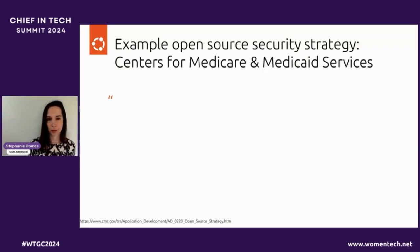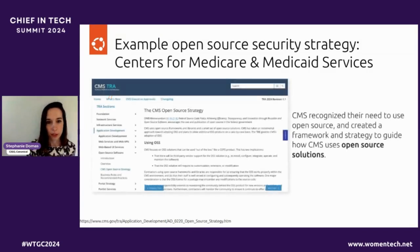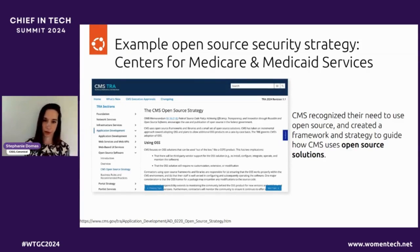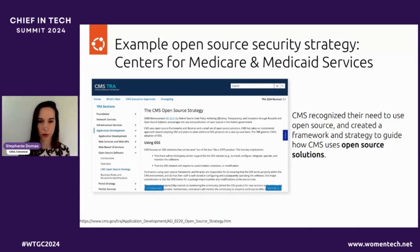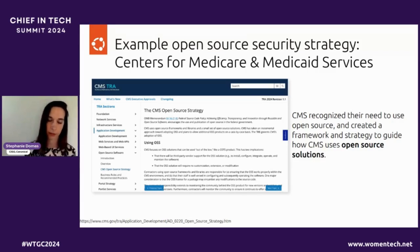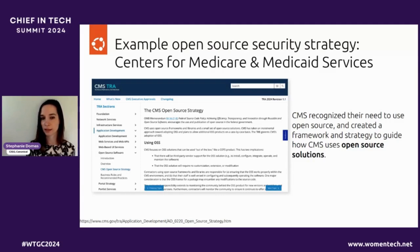A great example of an open source strategy is the one the Center for Medicare and Medicaid recently published. If you go to their website and search for open source solutions, you can see a really intentional strategy they put together. For those thinking about where to start or how to make your own open source strategy, I would recommend reading through this Medicare and Medicaid one — it's publicly available. They thought through all of the different scenarios to outline when open source could be used in their internal development, what types of licenses were acceptable, and in what situations, so they could be intentional about their open source.